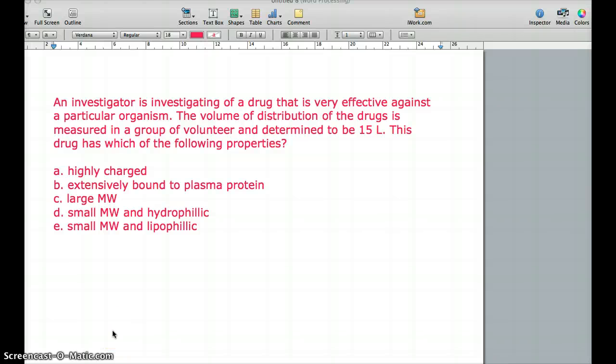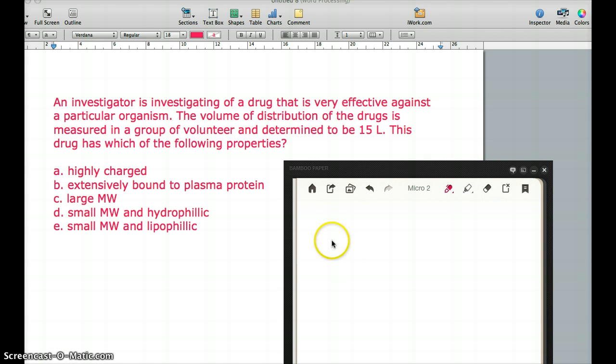This video continues with pharmacokinetic questions. This question deals with an investigator investigating a drug that is very effective against a particular organism. The volume of distribution of the drug is measured in a group of volunteers and determined to be 15 liters. This drug has which of the following properties? As we discussed earlier, we know that something that has